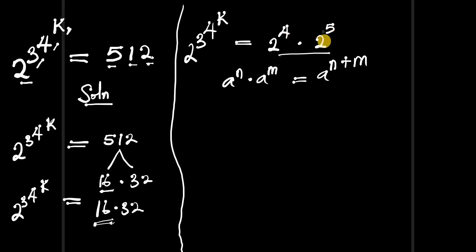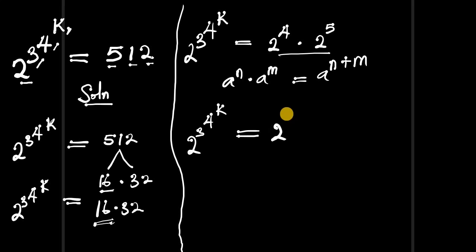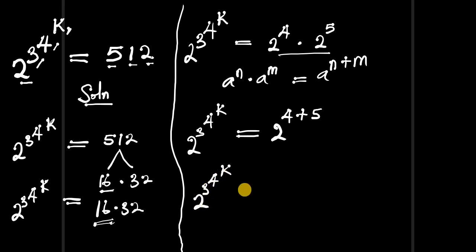Applying that identity, we add 4 plus 5 to get 9. So we have 2^(3^(4^k)) equals 2^9. At this point the bases are the same, so we can cancel them out.